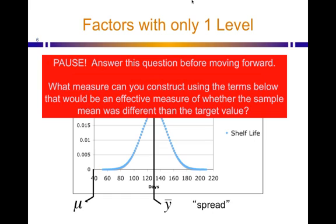What about it makes us more confident? And maybe can you use the answer to that question to answer the main question that we have? We want you to pause and answer this question before you go ahead. What measure can you construct, using the terms below, the mean of our sample, the mean target value we're trying to reach, and the spread of our sample, that would be an effective measure of whether the sample mean was different than the target value?